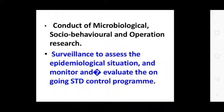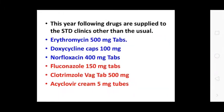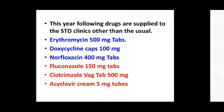Services to assess the epidemiological situation and monitor and evaluate the ongoing STD control program. One of the major actions taken was the strengthening of the existing facility structure of STD clinics. The following drugs are supplied in STD clinics: Erythromycin 500 mg, Doxycycline capsules, Norfloxacin 400 mg, Fluconazole 150 mg, Clotrimazole vaginal tablet 500 mg, and Acyclovir cream 5%.